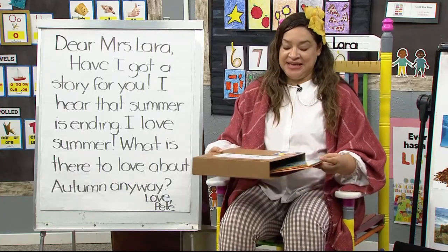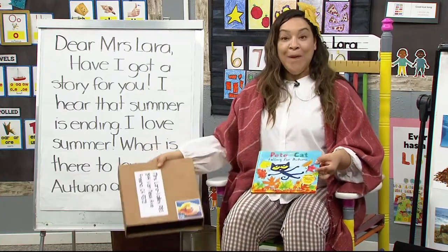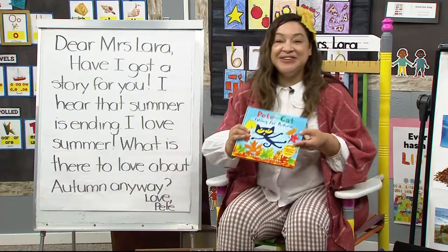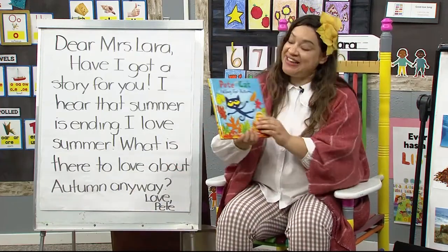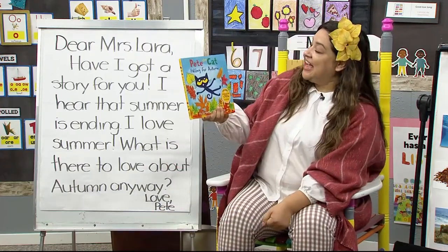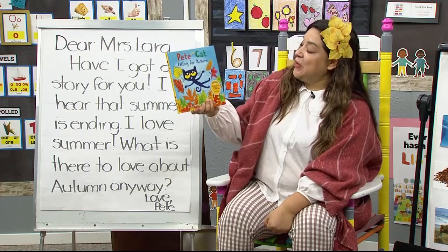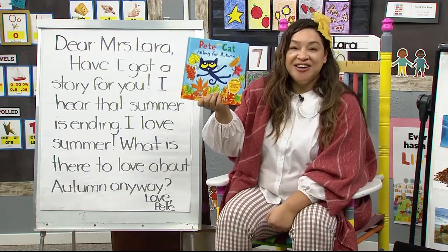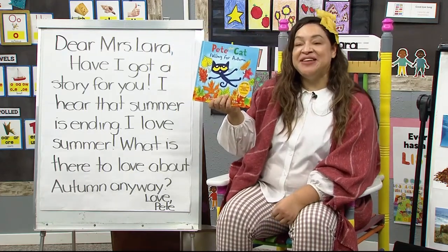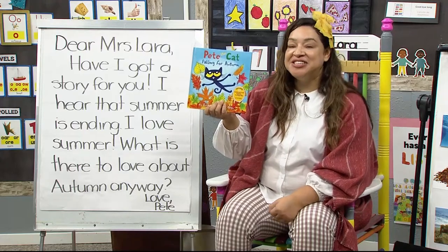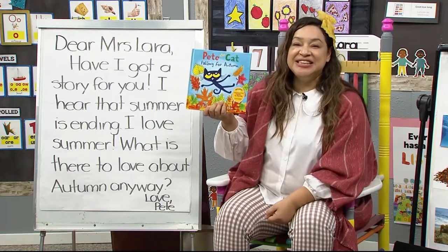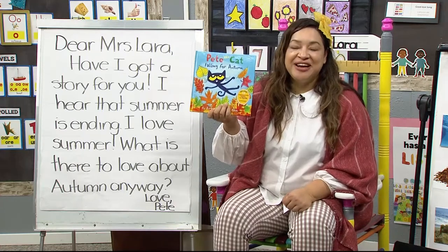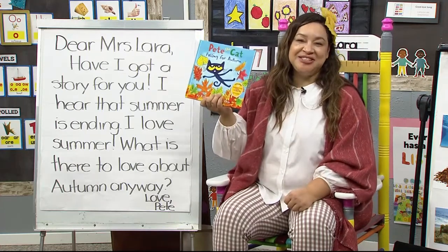Let's see what book it is. It's one of our favorite characters — do you see who it is? It's Pete the Cat. And Pete the Cat says, 'I'm falling for autumn.' So we have a video story that we're going to watch about Pete the Cat, where he's going to learn to fall in love with fall all over again. Let's watch together.